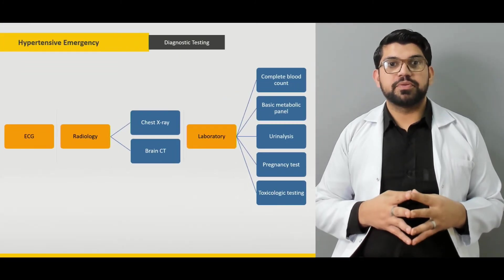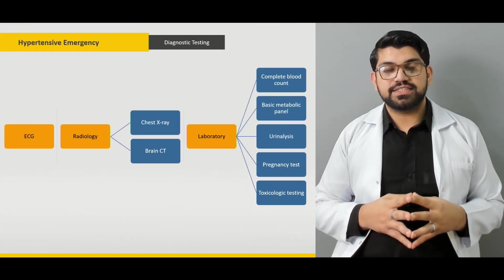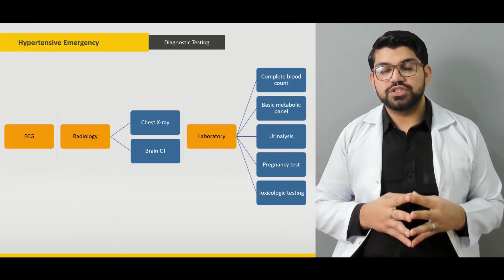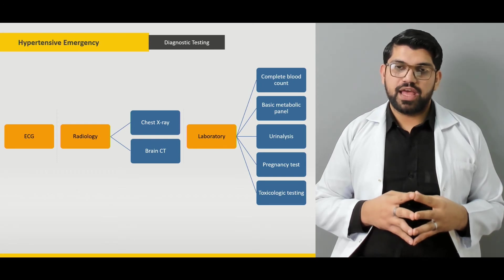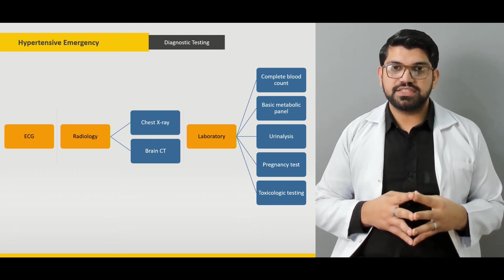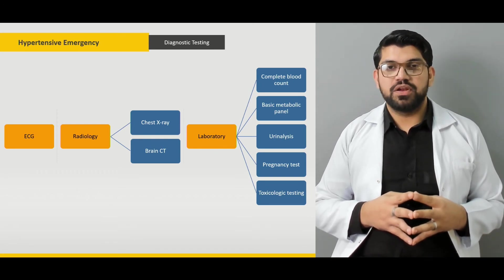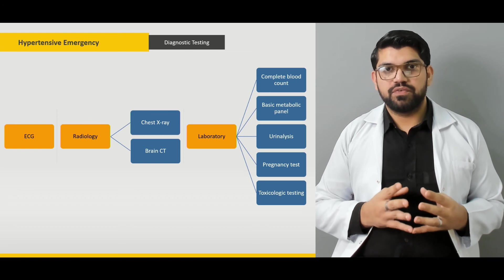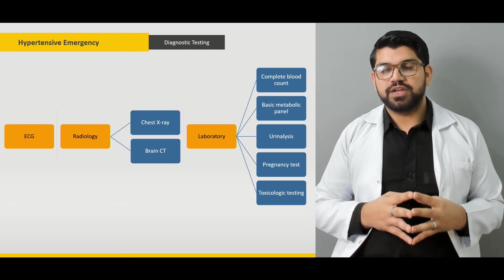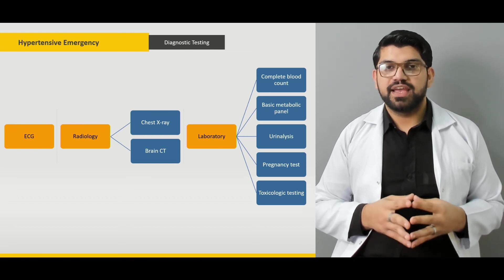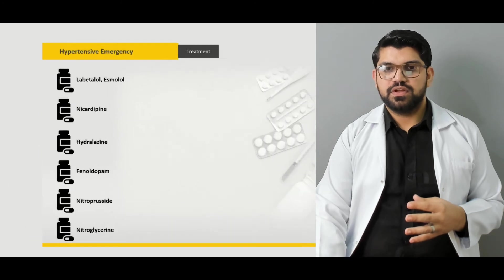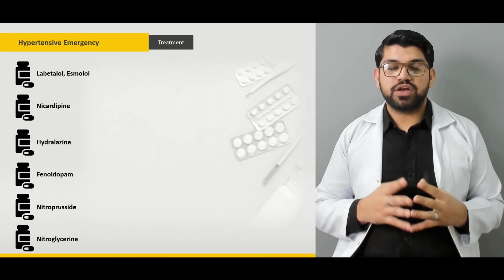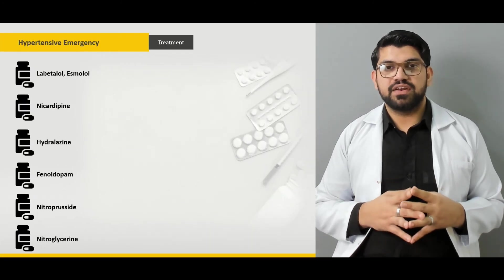Then will be the diagnostic testing that are useful in treating the patient with acute hypertensive emergencies, and what are the things to be looked into — mainly end organ damage. Then will be treatment, the treatment drugs that can be given in the emergency department.